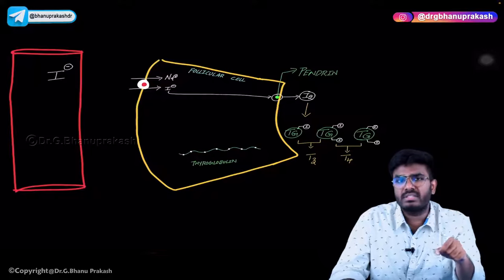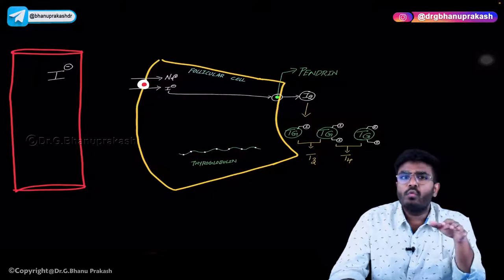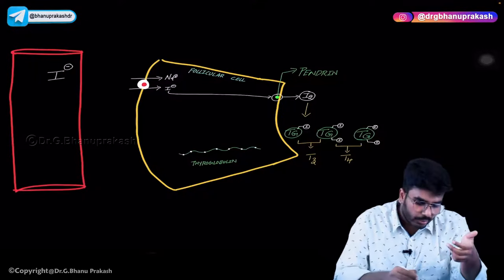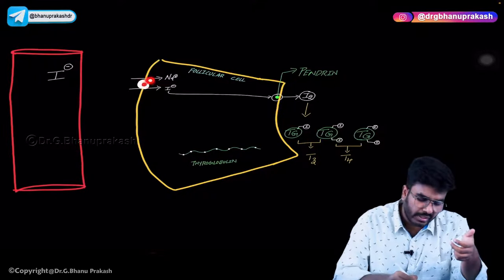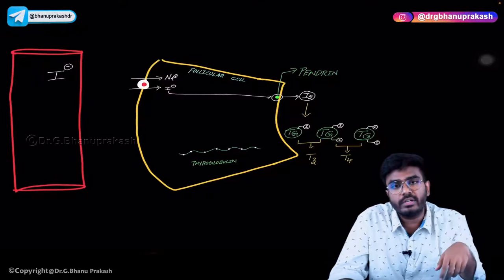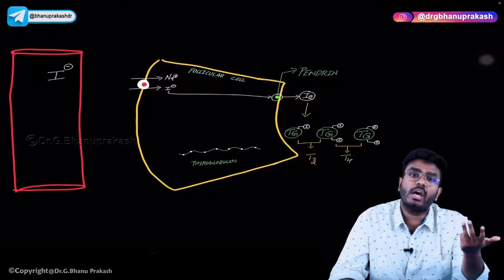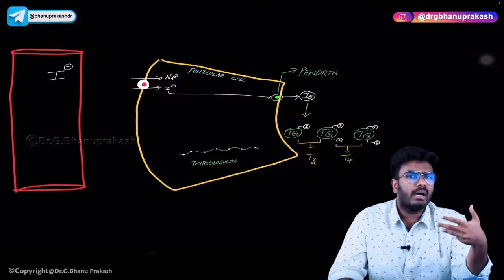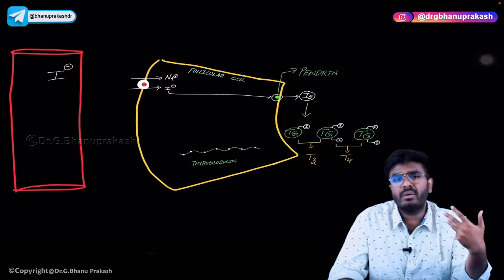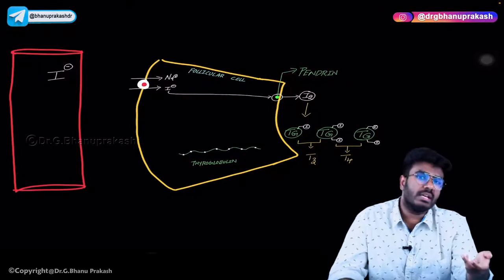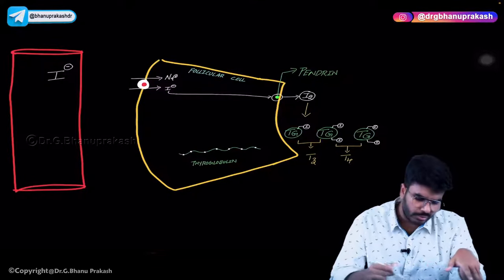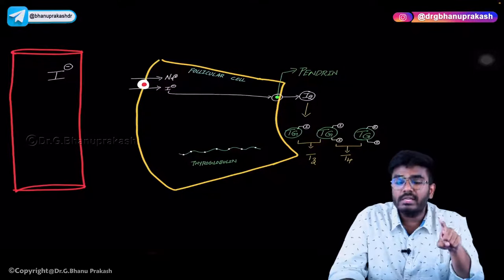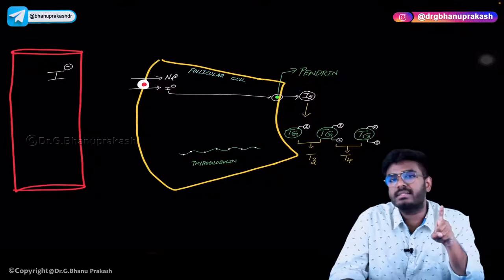This is important because if you want to inhibit thyroid hormone production — for example in thyrotoxicosis or hyperthyroidism — you can inhibit this transporter. Whenever you inhibit this transporter, iodides cannot enter the cell, and thyroid hormone production stops. Such drugs can be used to treat hyperthyroidism. The transporter name is sodium-iodide symporter.